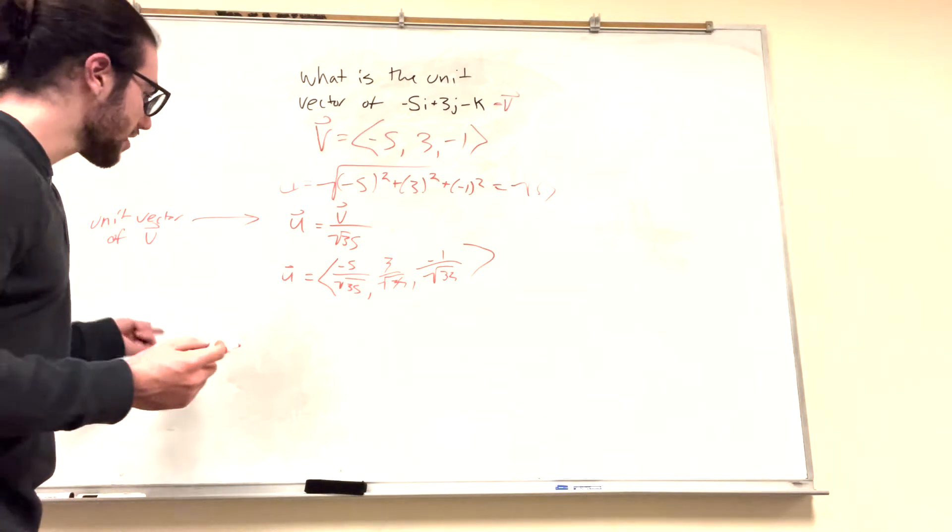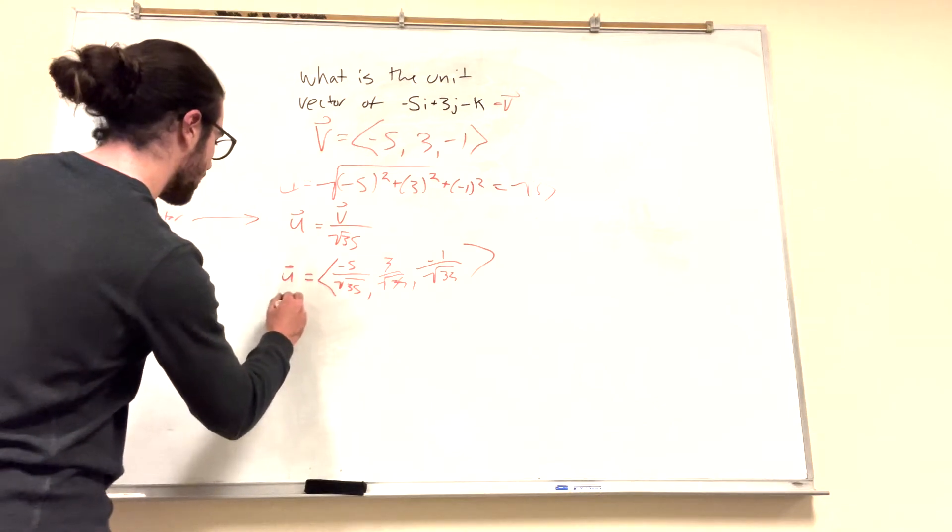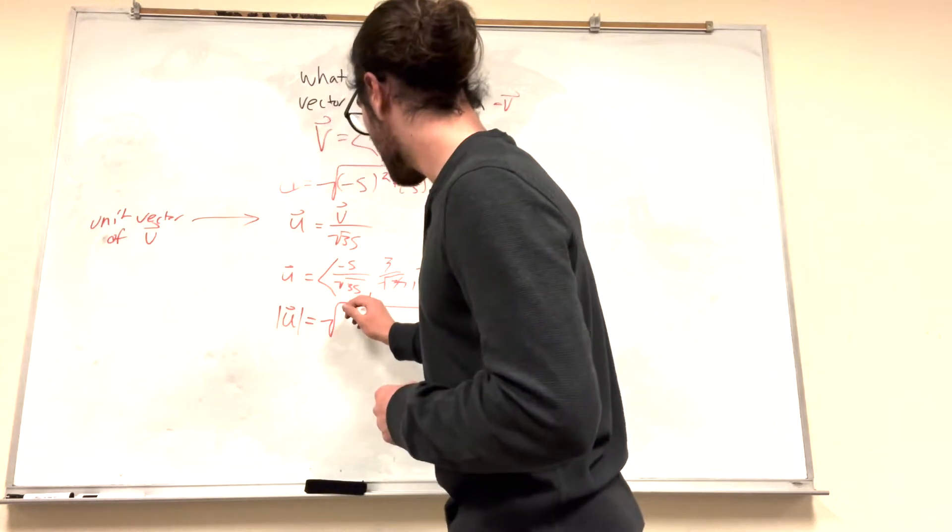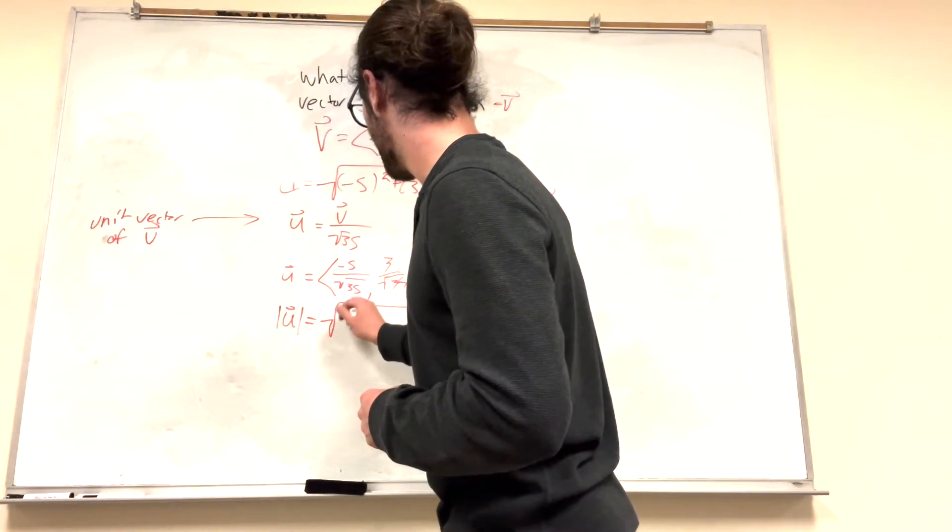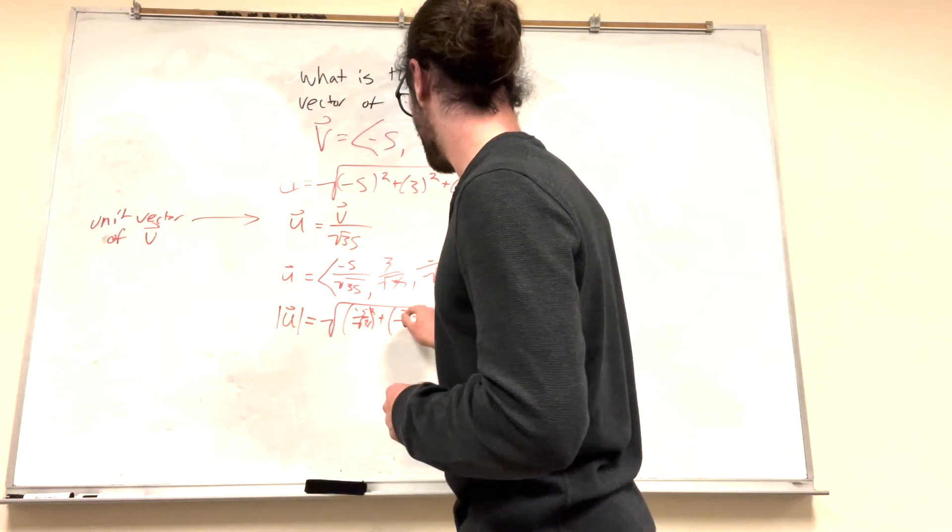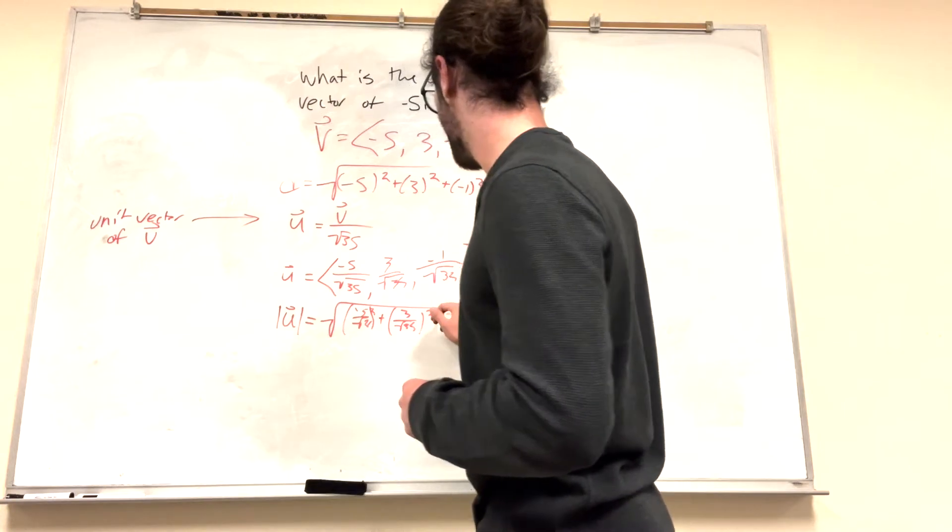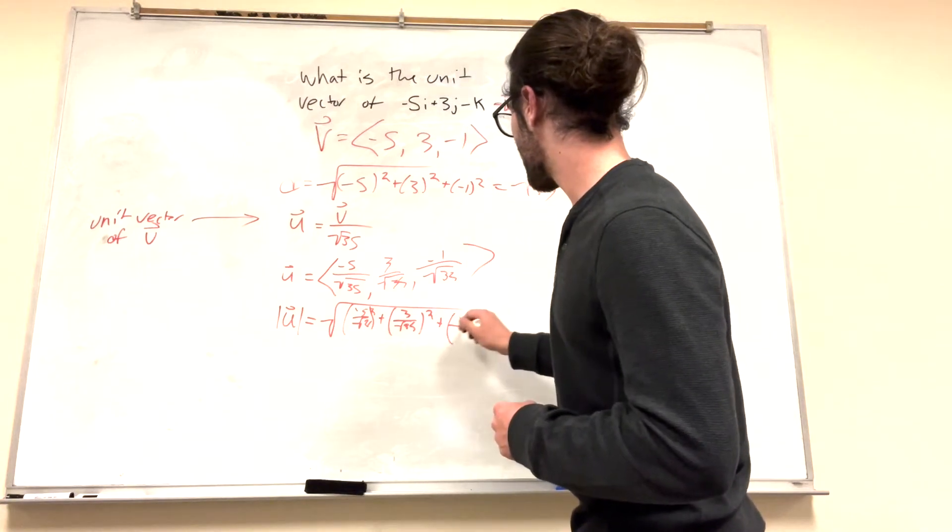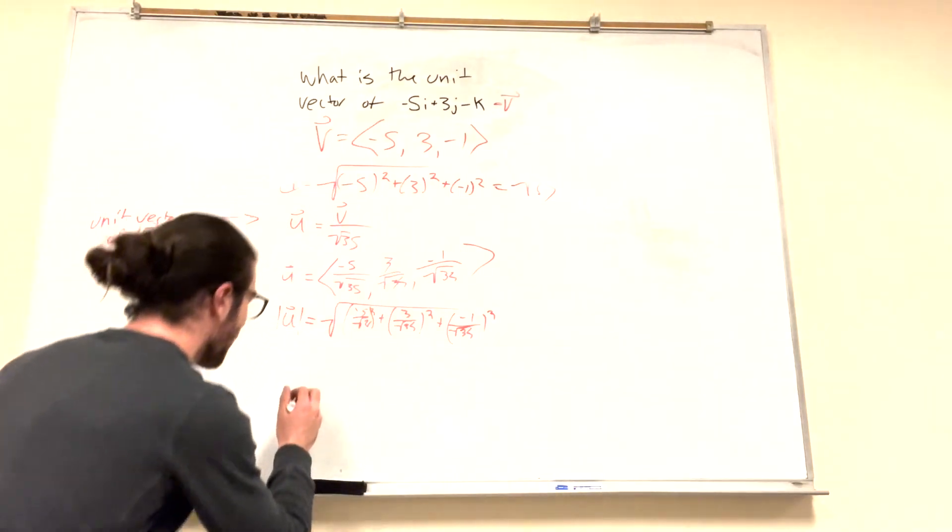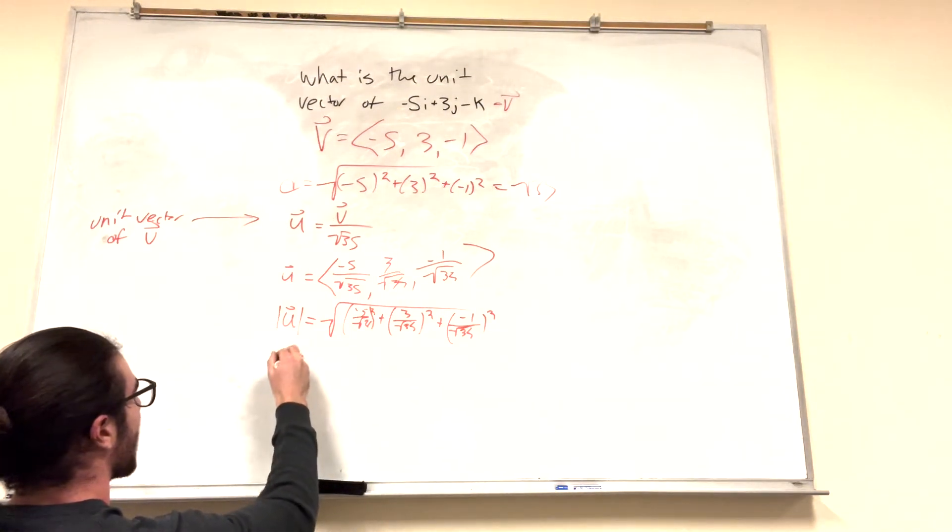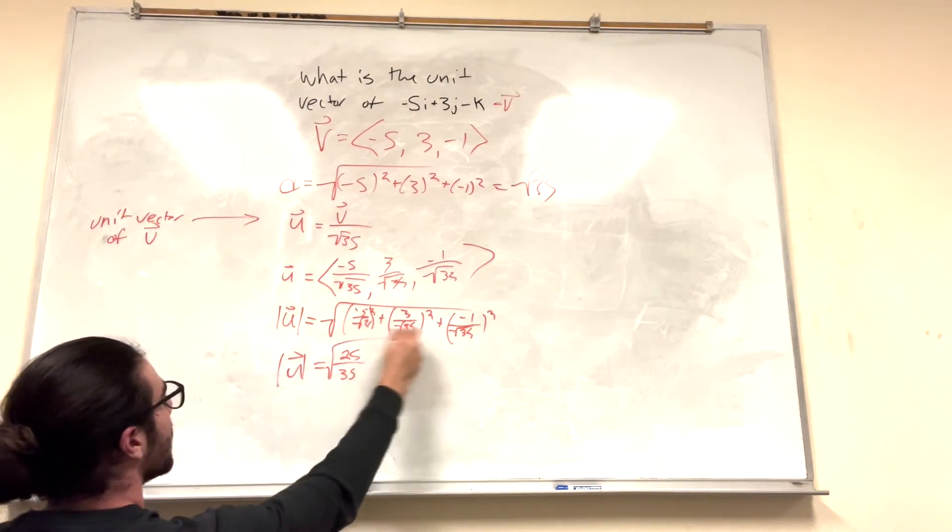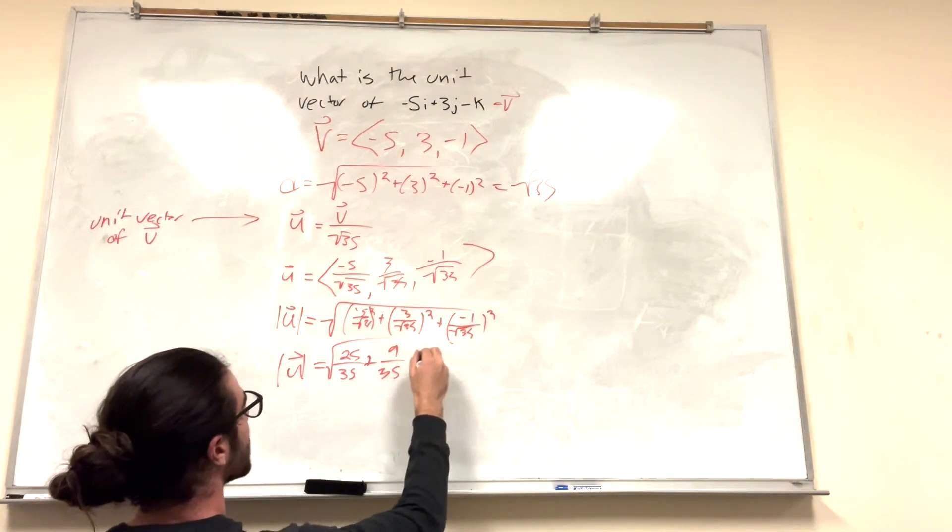What if we took the magnitude of this unit vector? The magnitude of it, right? So, it's going to be the square root. It's going to be negative 5 squared over the square root of 35, plus 3 over the square root of 35 squared, plus negative 1 over the square root of 35 squared. Now, what happens if we do this?